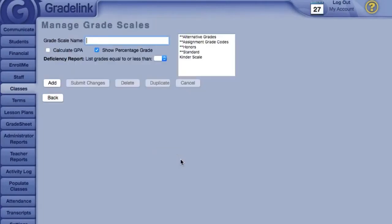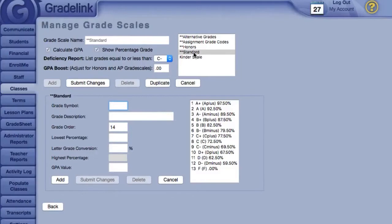To get started, hit the gear icon next to the Gradescale menu. The default Gradescale is standard, which is a traditional A-F Gradescale.